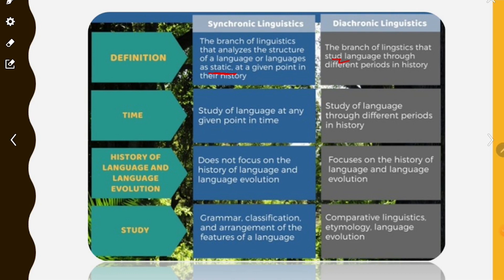Synchronic is the study of language at any given point in time, while diachronic is the study of language through different periods in history. The history of language and language evolution is very important. Synchronic linguistics does not focus on the history of language or language evolution.